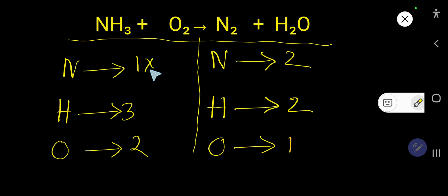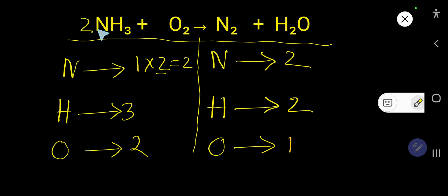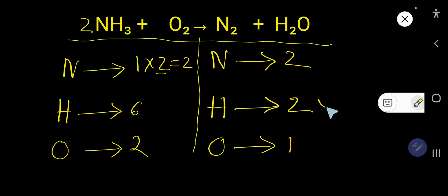To balance nitrogen: there is one N on the left and two on the right. Simply multiply NH₃ by two — place the coefficient 2 before NH₃. That gives two nitrogen atoms. With coefficient 2 on NH₃, the number of hydrogen becomes six (3 × 2). Nitrogen is now balanced.